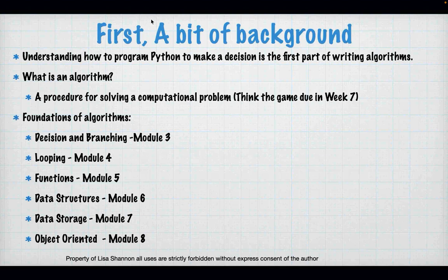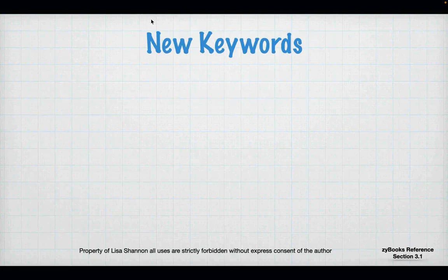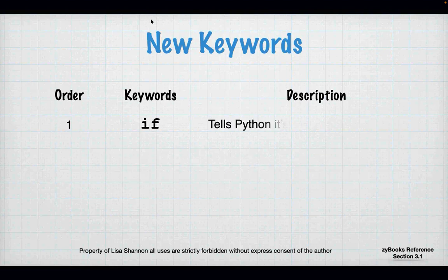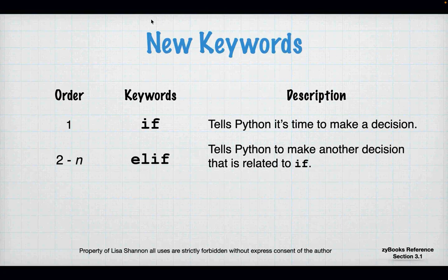If you don't understand branching, it's going to be really hard to understand looping. So speak up, put your hand up, put something in the chat if there's something you're not getting — let's work through it tonight so you have the foundation you need. We have some new keywords. There's a keyword called if — I-F — and it tells Python it's time to make a decision. In the hierarchy of decisions, it always has to be the first one.